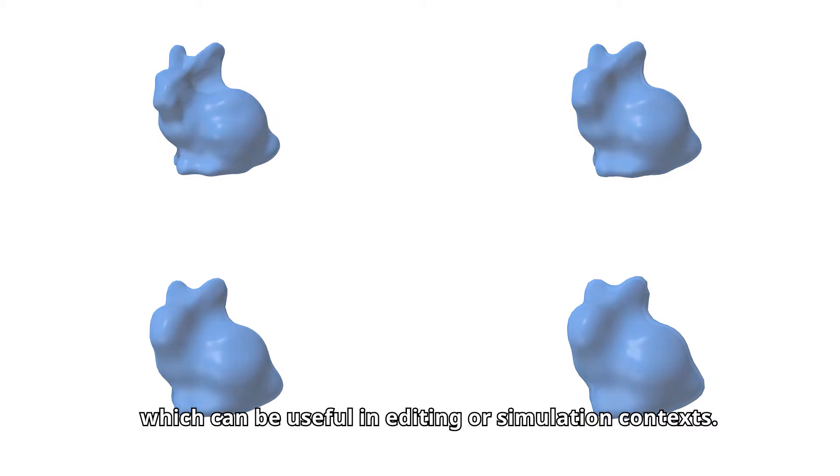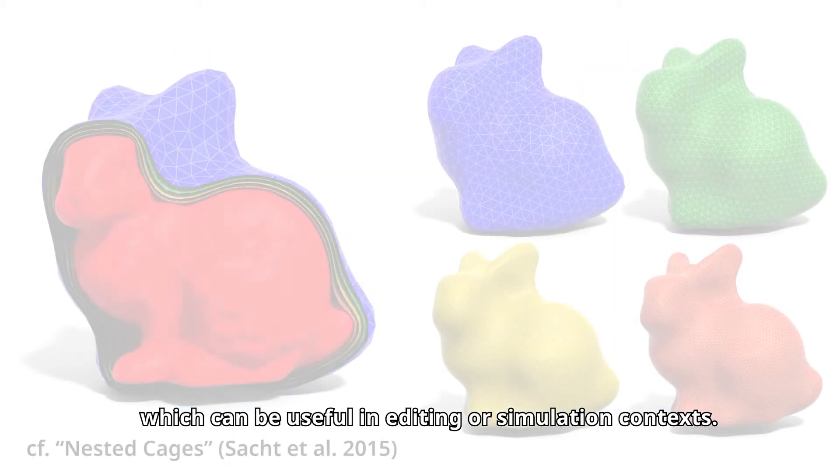If we repeatedly shrink-wrap the outermost layer like this, we end up with a series of nested cages, which can be useful in editing or simulation contexts.